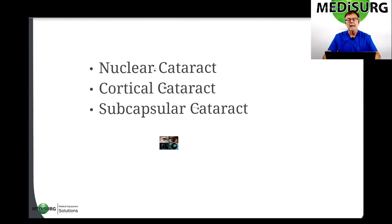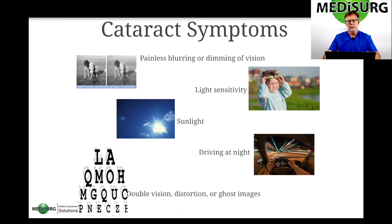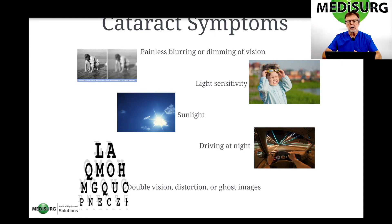Next, we're going to talk about cataract symptoms. Cataracts basically cause a painless blurring or dimming of vision, and light sensitivity. When you look at the sunlight, you get a lot of glare. Driving at night, the headlights become very large and glare. And if you look at an eye chart or some sort of structure with high contrast, you'll see a ghost image appear.